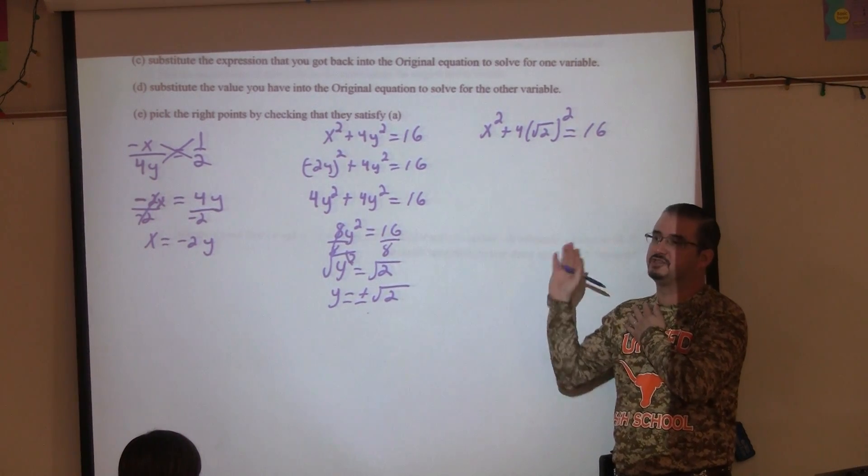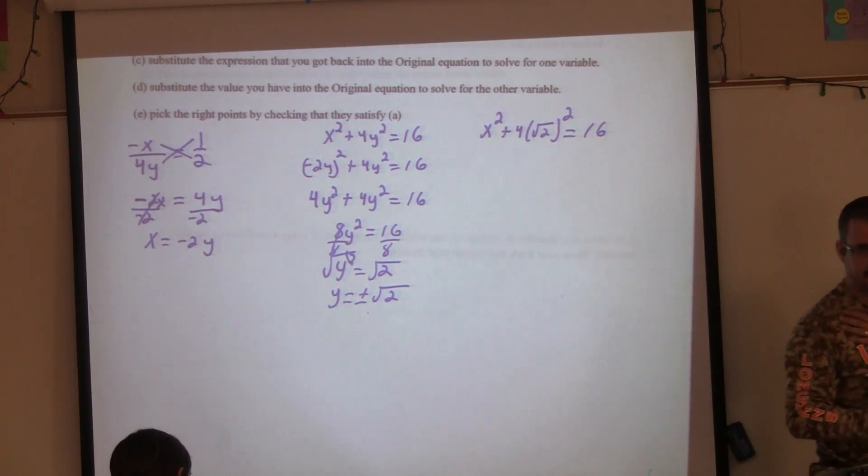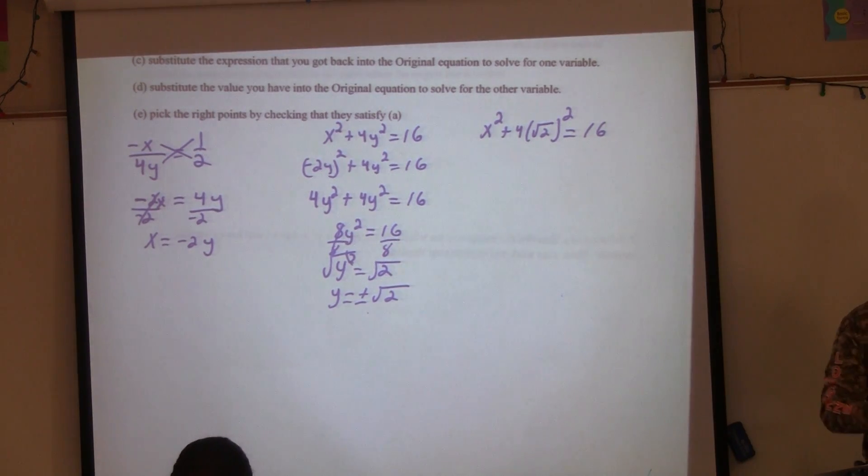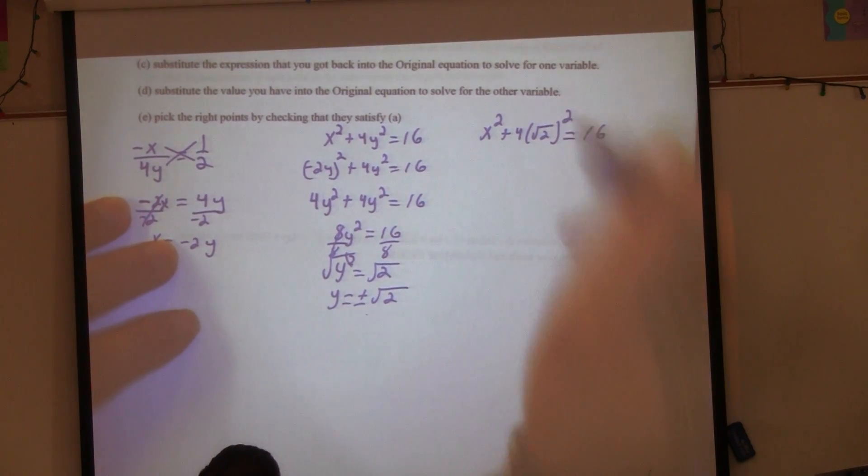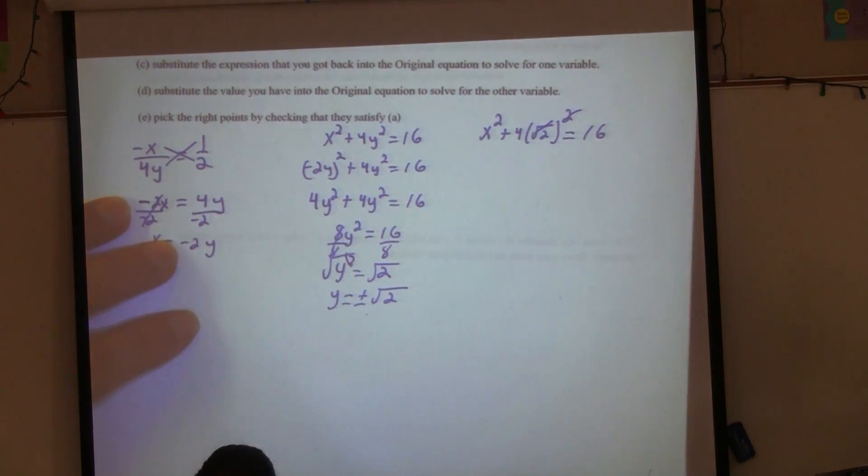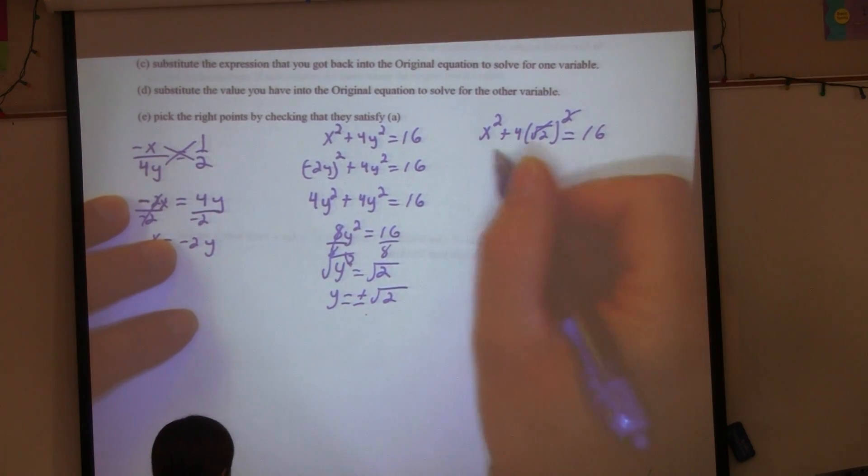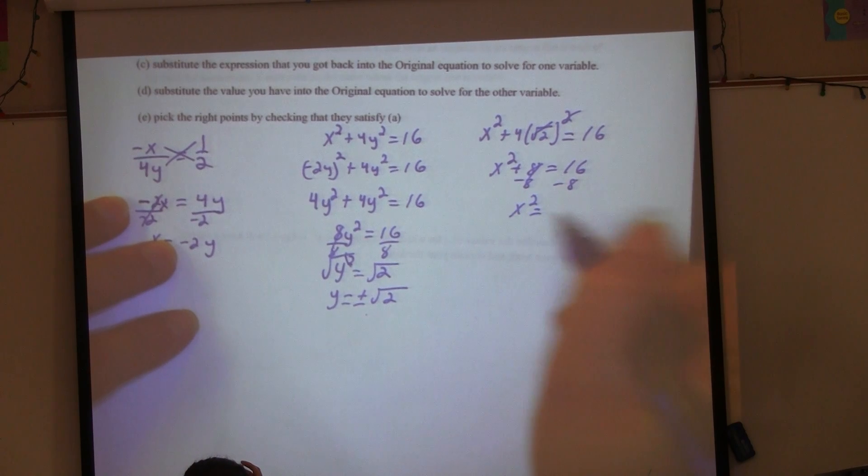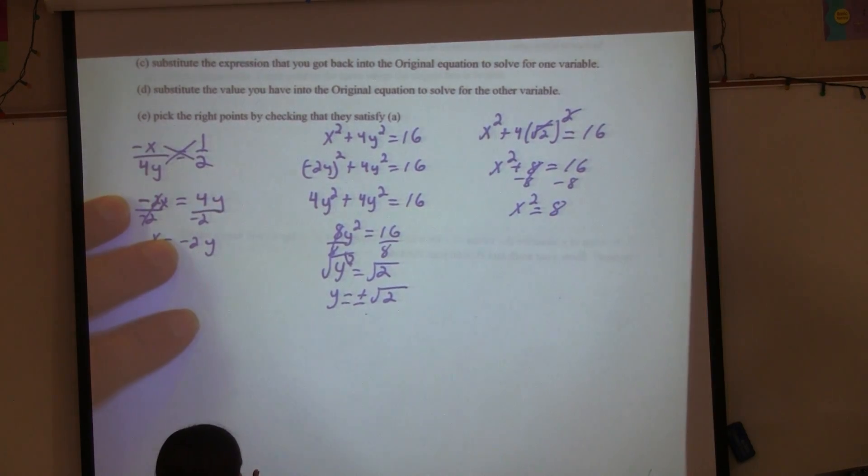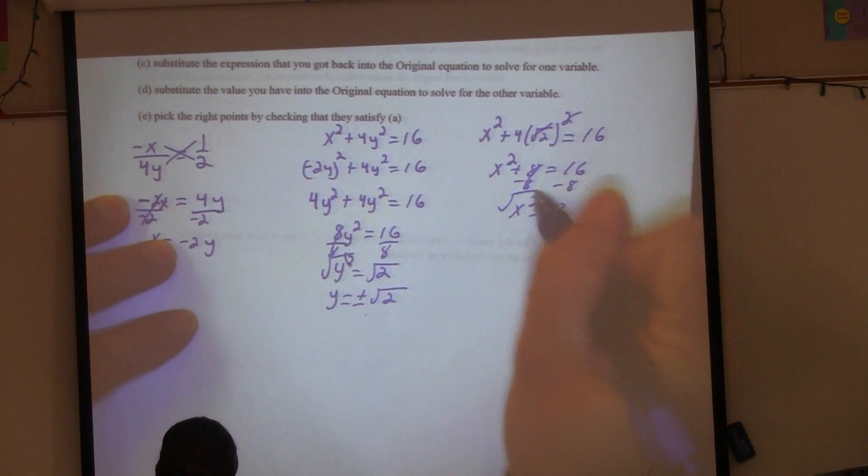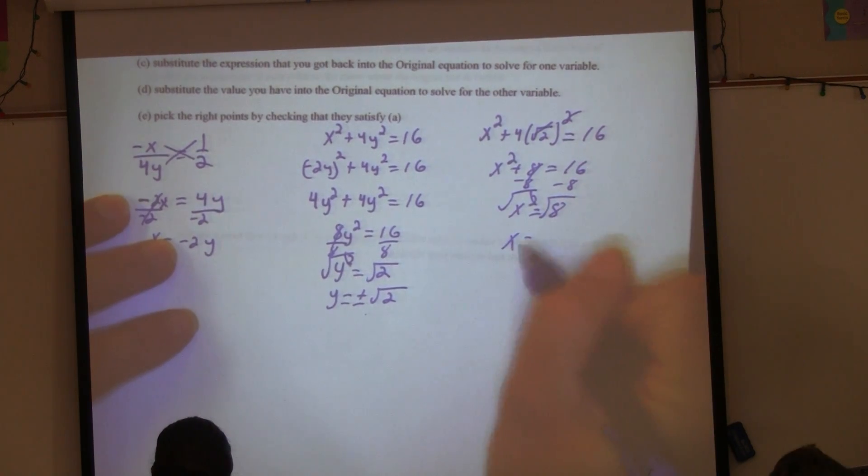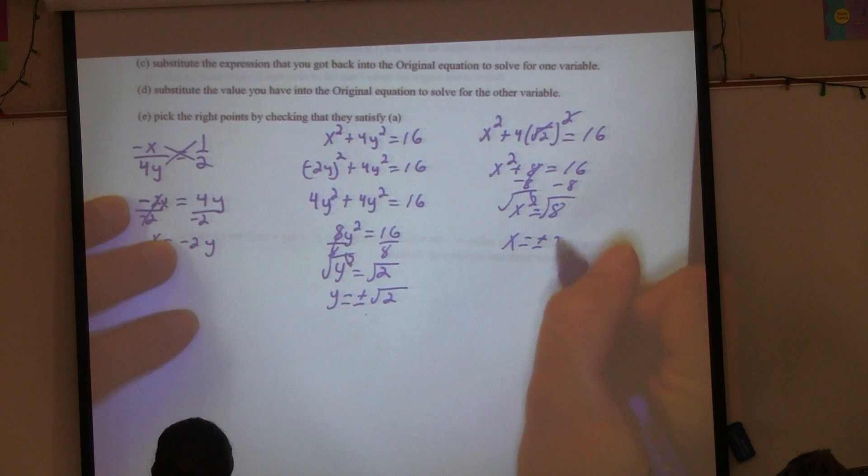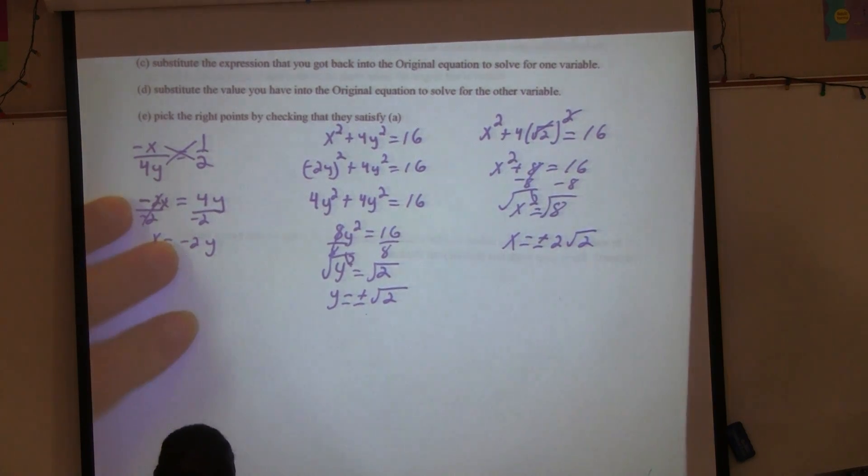I don't have to do both of them because it works out in my problem. Sometimes you would have to check each single one if they were to give you two different answers. So be careful. If I have (√2)², what happens to the square root and the square? Now I just have 4 times 2, which is 8. X² = 8, and what is the square root of 8? ±2√2.